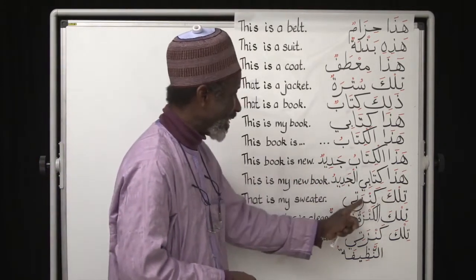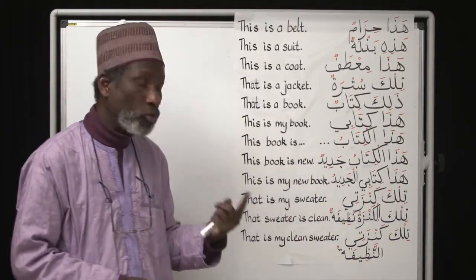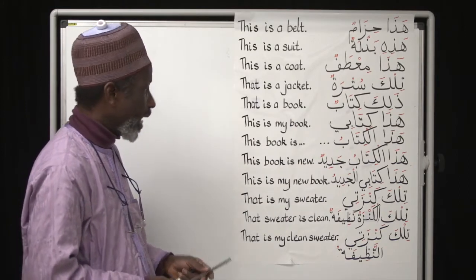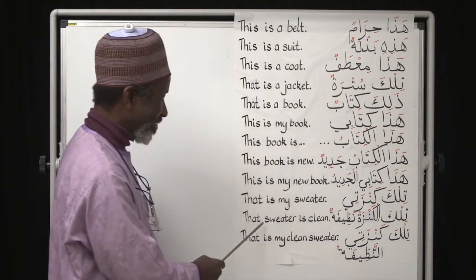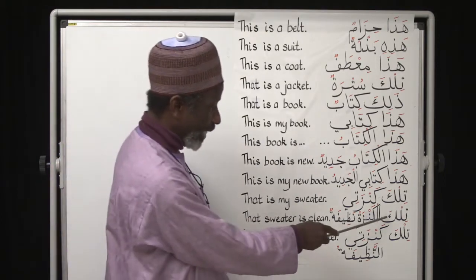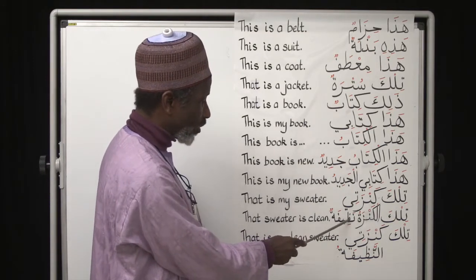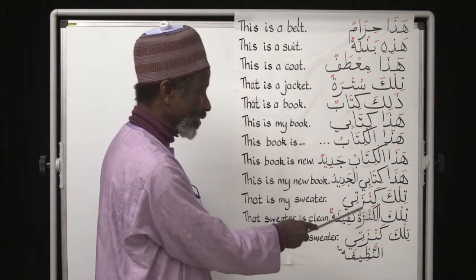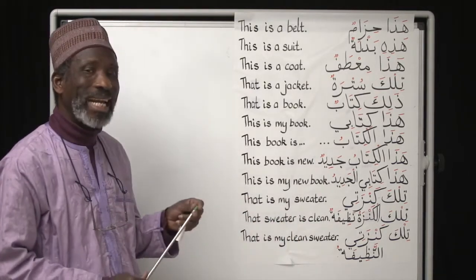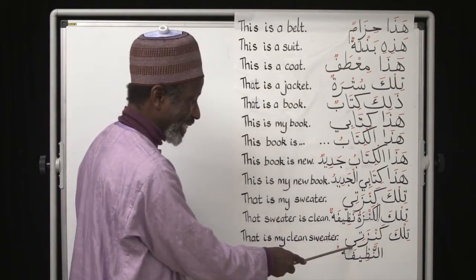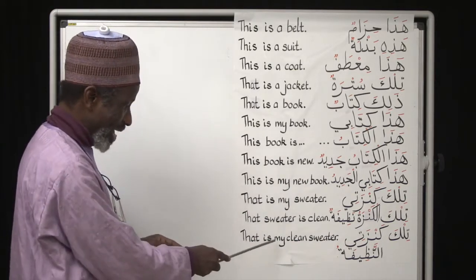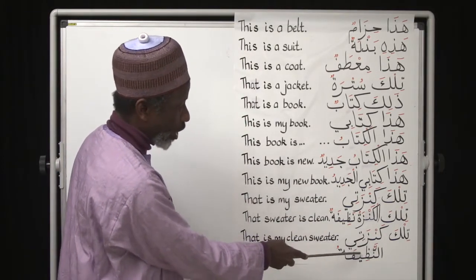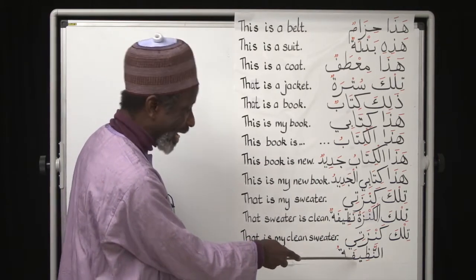'Tilka kanzatī' — kanzatun is a feminine word meaning sweater — so 'tilka kanzatī' means 'that is my sweater.' 'Tilka al-kanzatu naẓīfatun' — that sweater is clean. If you remove tilka, you know the meaning of 'al-kanzatu naẓīfatun' — the sweater is clean. Without tilka you say 'kanzatī naẓīfatun' — my clean sweater.